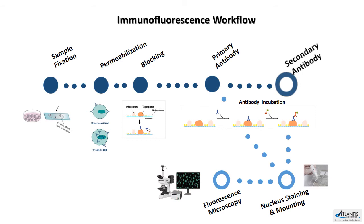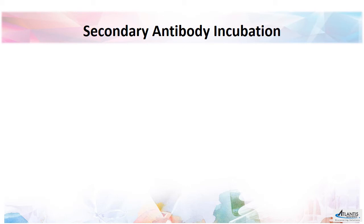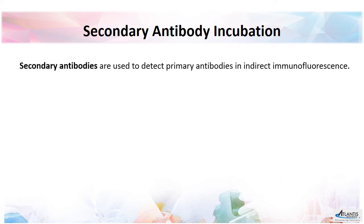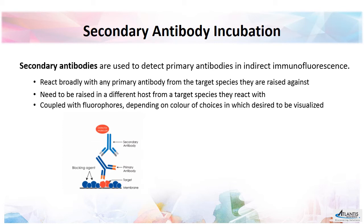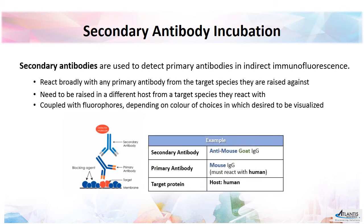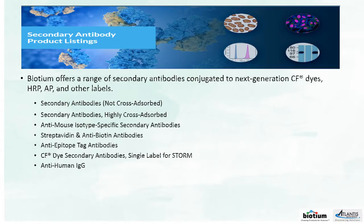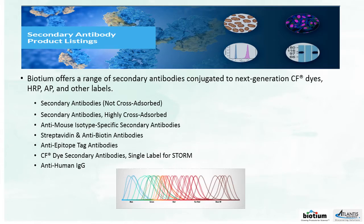Secondary antibody incubation: secondary antibodies are usually used in indirect immunofluorescence to detect primary antibodies. They are usually coupled with fluorophores depending on the color of choice. Biotium offers a range of secondary antibodies conjugated to CF dyes and other labels available in a wide range of wavelengths.